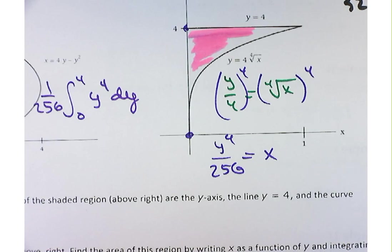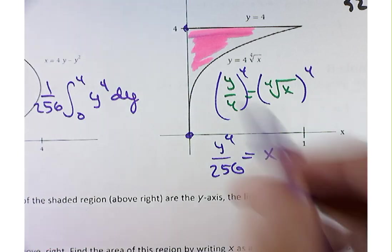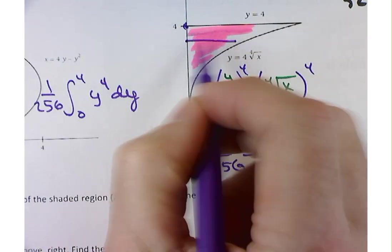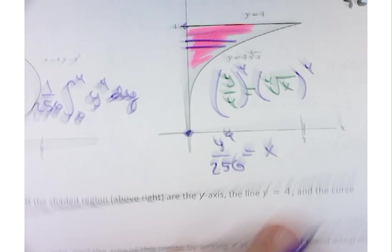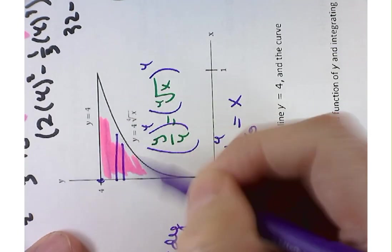I have a question. Yes. So why are we turning x into a function of y? Because I'm finding the area between this curve and the y-axis, not between a function and the x-axis. Okay. All right. Makes sense. Thank you. Sure.